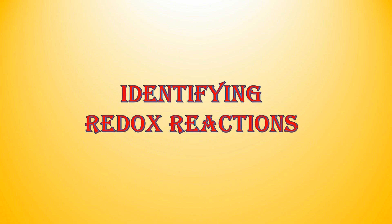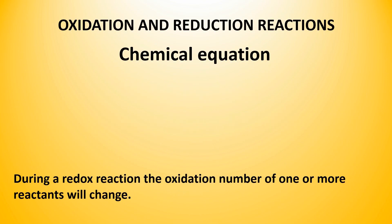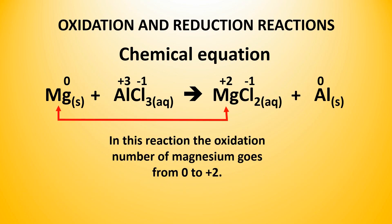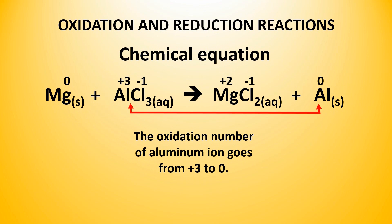Identifying redox reactions. During a redox reaction, the oxidation number of one or more reactants will change. In this reaction, the oxidation number of magnesium goes from 0 to plus 2, and the oxidation number of the aluminum ion goes from plus 3 to 0.